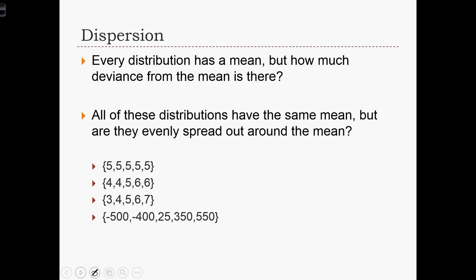As you can see in these four example data sets, we have the mean of each of these data sets being equal to 5. But clearly, they're not all spread out in the same way. In the first case here, we actually have no dispersion whatsoever.